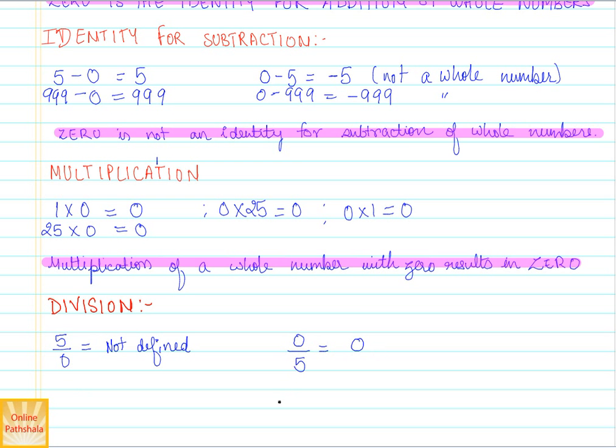Dividing a number by 0 is not defined, and dividing 0 by any other number always leads to 0. That was about the role of 0 in multiplication, division, and the identity for addition and subtraction. See you in the next session.